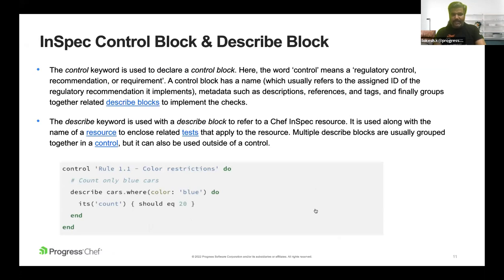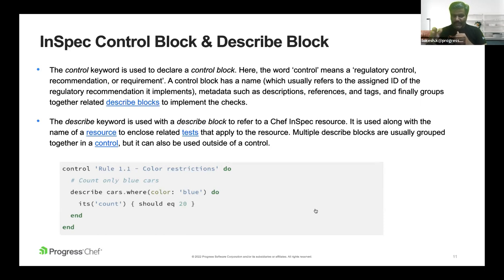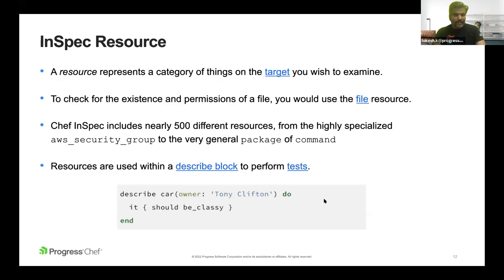An InSpec control block maps one security requirement — such as from CIS, STIG, or NIST standards — to one control. A bunch of tests can be grouped together in a control block. A describe block is equivalent to one test done on a resource — each resource block equates to one test. In this example, testing is done on a resource called 'car.'